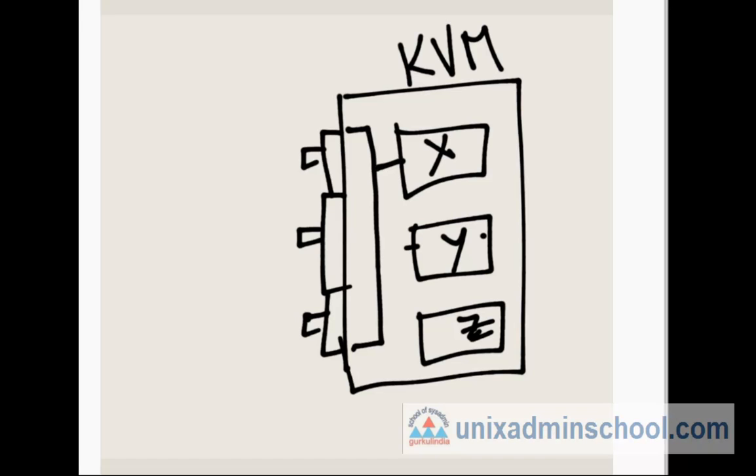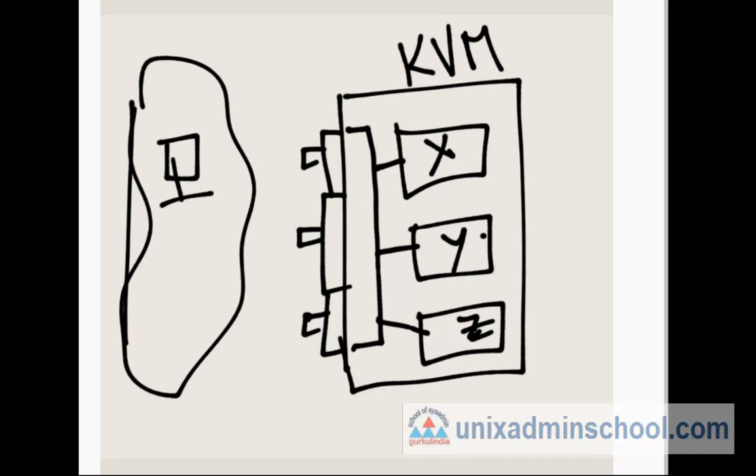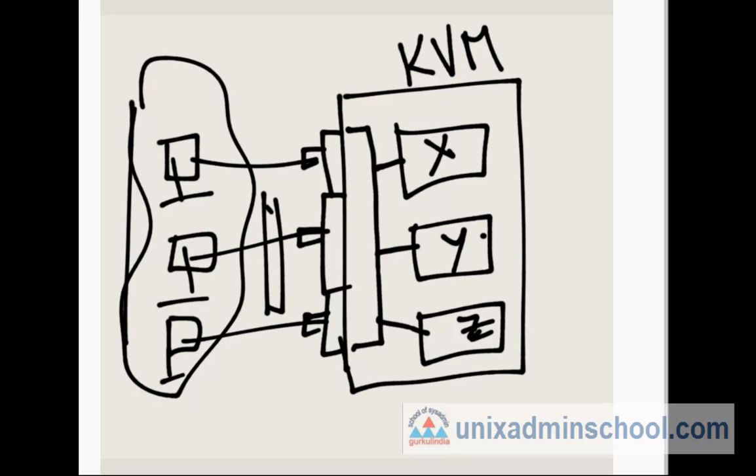This individual VMs will connect to this bridged interface as a separate IP. So from the external world, from the external internet world, whenever if you have separate PCs or if you want to connect from external world, you can directly connect to them by using their own IPs like ping X or SSH Y or CP Z.